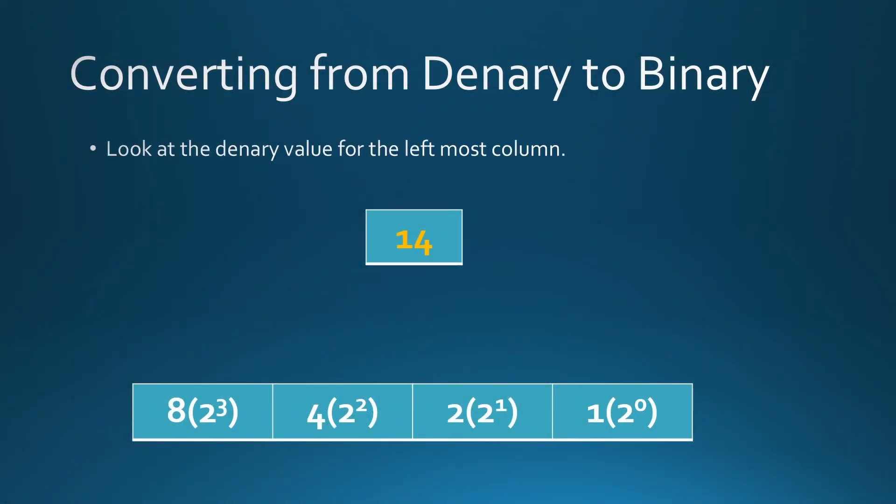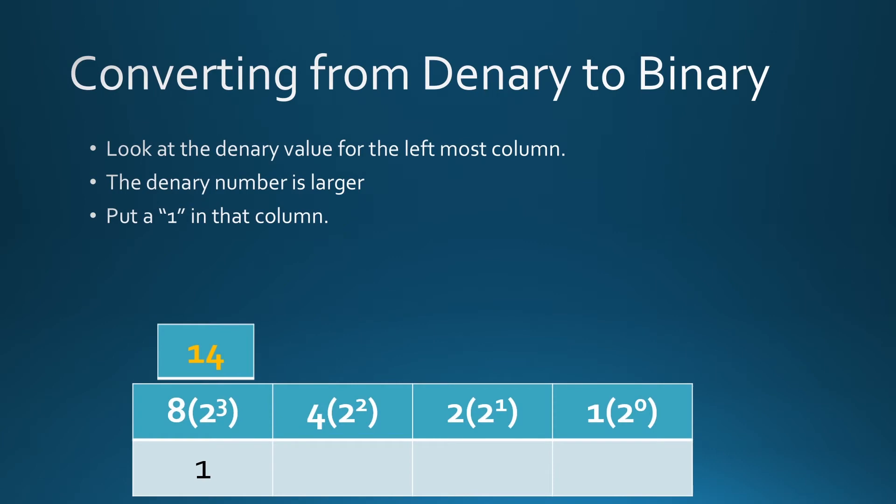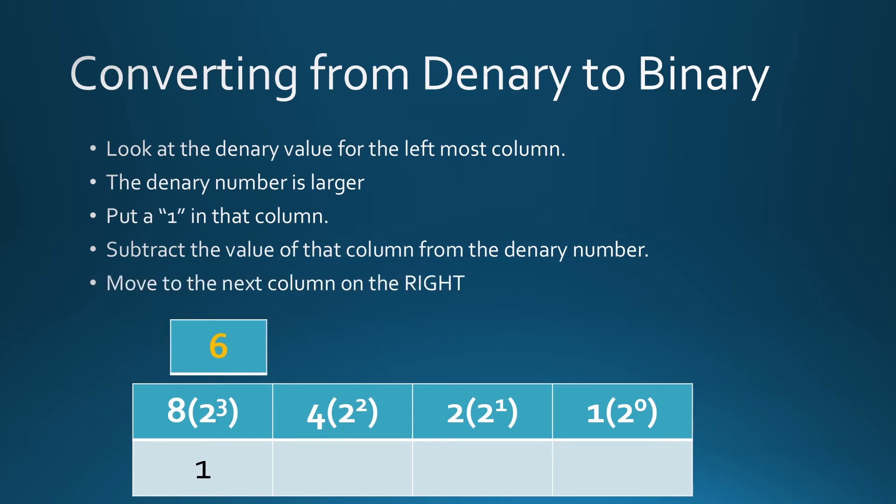So those are the columns we have. Let's move to the left-hand column and compare. 14, is that bigger than the column you're looking in? Well yes it is. That means you know you're going to be able to get an 8 into this because it's larger. The only number is larger. So put a 1 in there. Then you're going to have to do a bit of maths now. You have to subtract that value of the column, the 8, away from the denary number, and that's going to leave you 6. So move to the right.